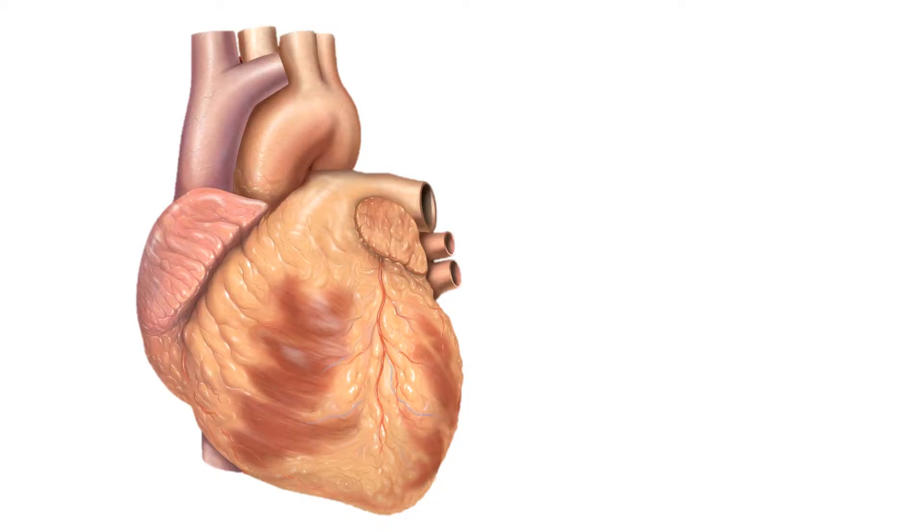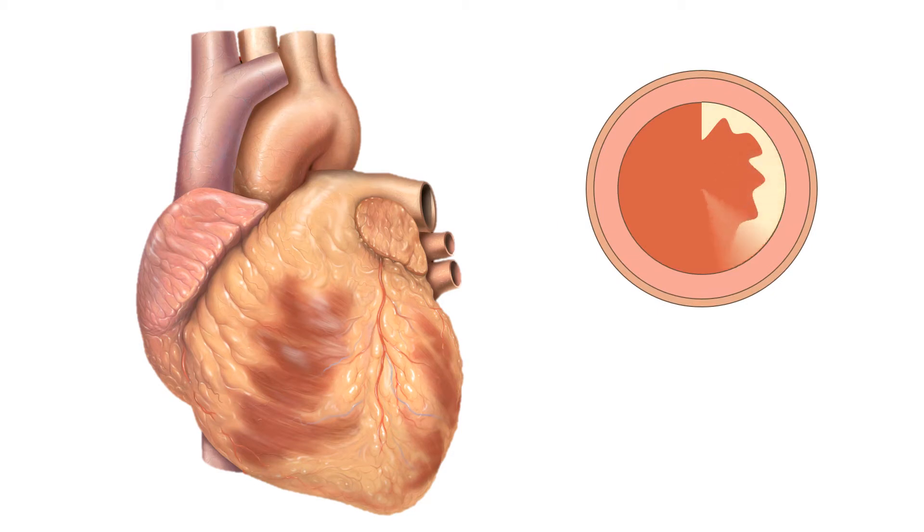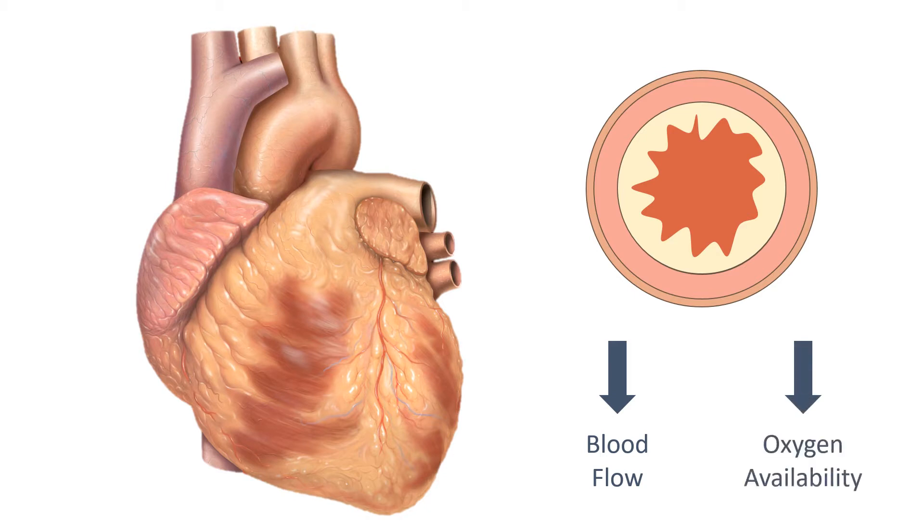Coronary heart disease is one of the biggest global killers. In coronary heart disease, layers of fatty material build up inside the coronary arteries, narrowing them. This reduces the flow of blood through the coronary arteries, resulting in a lack of oxygen for the heart muscle.